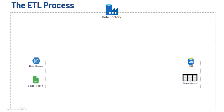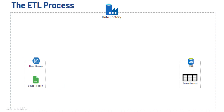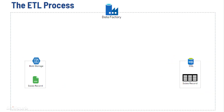In this diagram you can see that we have the blob storage over here which contains a CSV file for the sales record, and on the other hand we have the SQL database table for the sales record. Both of them have the same schema. We have already seen how you can create a storage account and upload some files — in our case we uploaded this sales record CSV file. Then we saw how you can create a database in Azure SQL and create a table, so we have a sales record table in the SQL database.